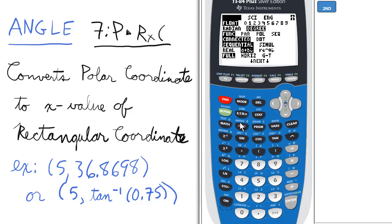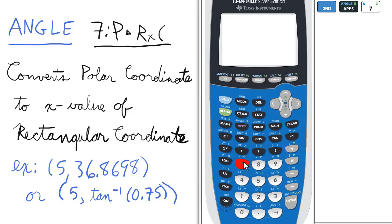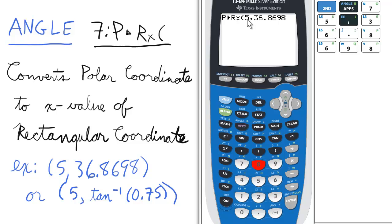So we can go to the angle menu, select option 7, and then we're going to enter 5, 36.8698, which means that we have a radius of 5 and 36.8698 is theta in degree terms, and enter.